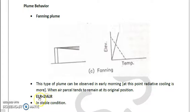This type of plume behavior can be observed in early morning or late night. Therefore, at the time radiative cooling is more, when air parcel tends to remain at its original position and generally fanning sort of plume is observed.